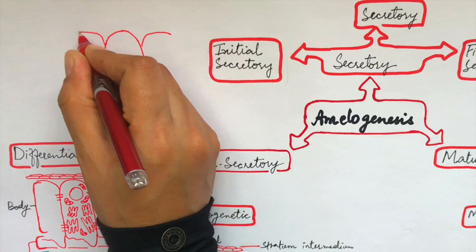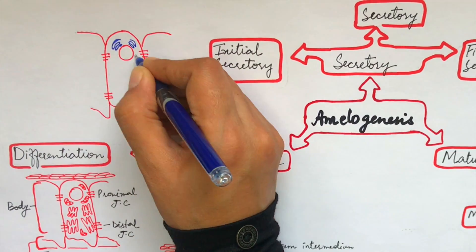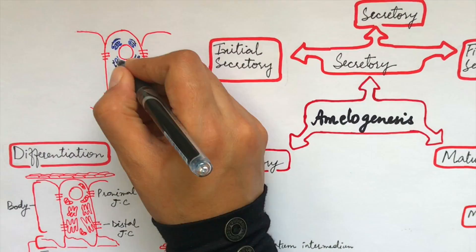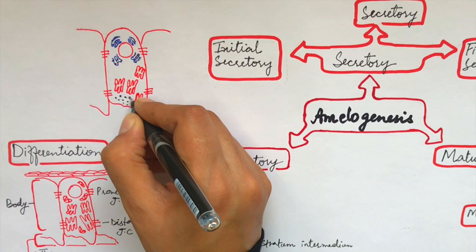In the initial secretory phase of the secretory stage, ameloblasts are at the peak of their synthetic and secretory activity. Rough endoplasmic reticulum is formed at the supranuclear compartment of the cells where they are readily available for translation of messenger RNAs of enamel proteins.